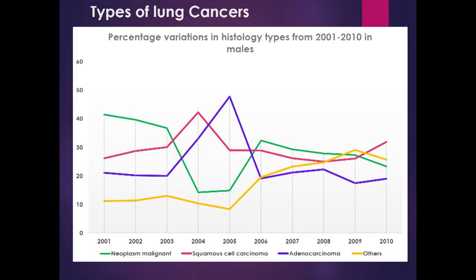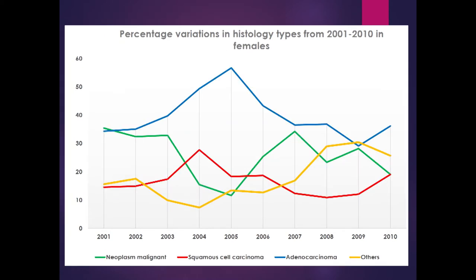Histological patterns in males show a significant proportion reported simply as malignant neoplasm, making exact classification difficult. However, squamous cell carcinoma appears at a higher proportion than adenocarcinoma in most years. In females, there is a higher percentage of adenocarcinoma than squamous cell carcinoma, as shown in the graph.